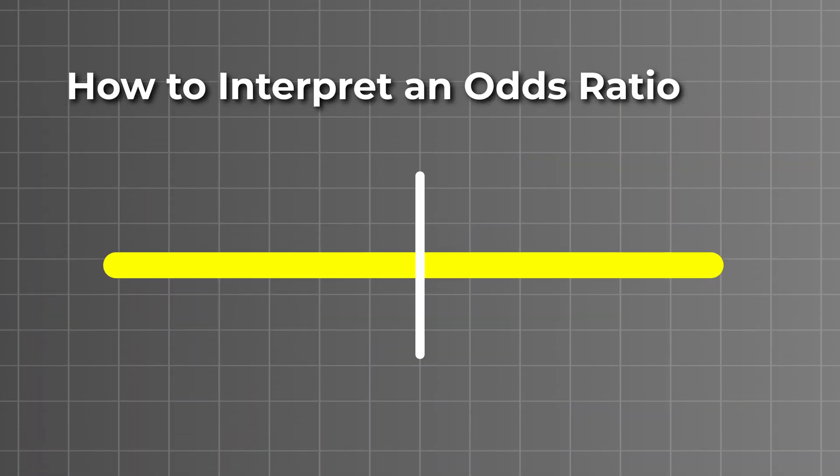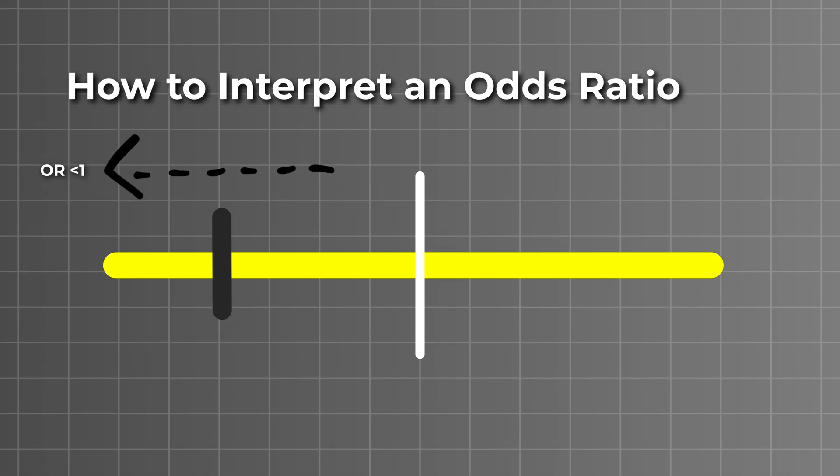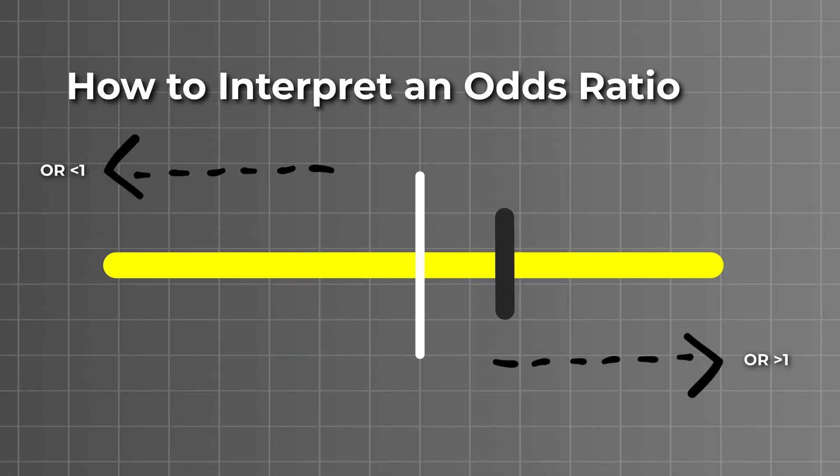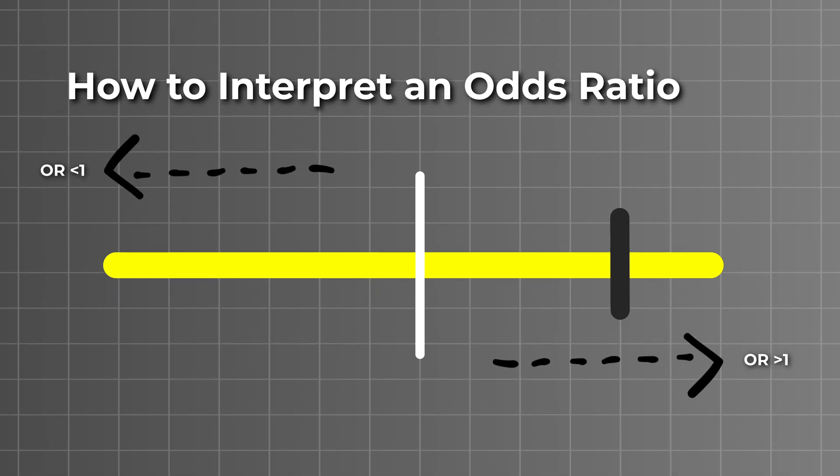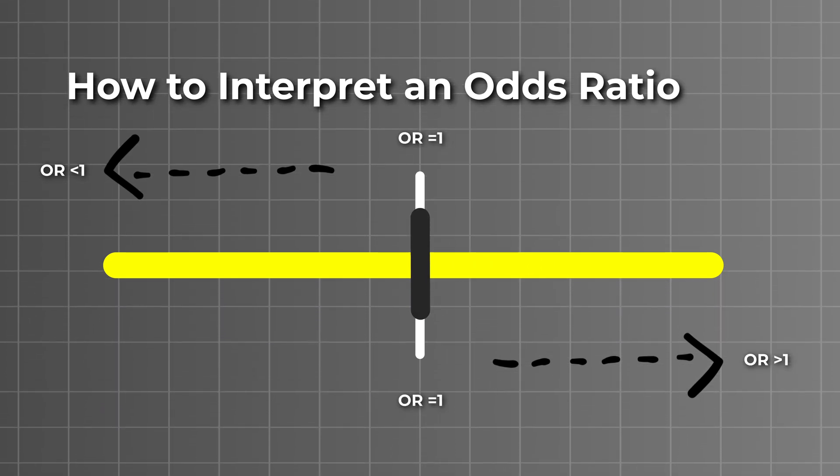The interpretation for the odds ratio is the same as for the risk ratio, whereby an odds ratio smaller than 1 indicates that the new drug decreases the odds of death, an odds ratio larger than 1 would indicate it increases the odds of death, and an odds ratio of 1 would indicate no difference.